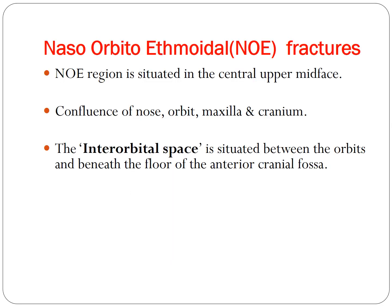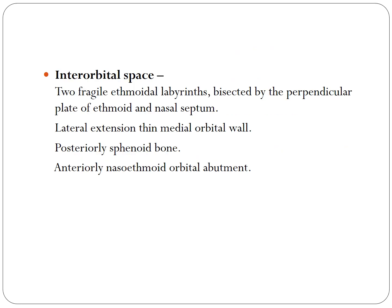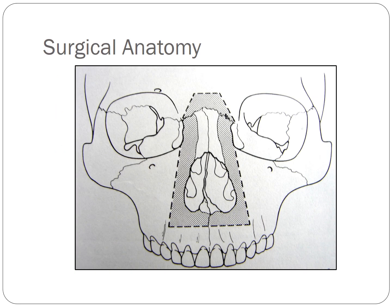Now we come to the naso-orbital ethmoidal (NOE) fracture, which involves the nasal bone, orbital bone, and ethmoid bone. This region is situated in the central upper mid-face and is a confluence of the nose, orbit, maxilla, and cranium. The inter-orbital space — between the orbits beneath the floor of the anterior cranial fossa — has boundaries: two fragile ethmoidal labyrinths bisected by the perpendicular plate of the ethmoid and nasal septum, the thin medial orbital walls laterally, the sphenoid posteriorly, and the naso-ethmoid orbital abutment anteriorly.